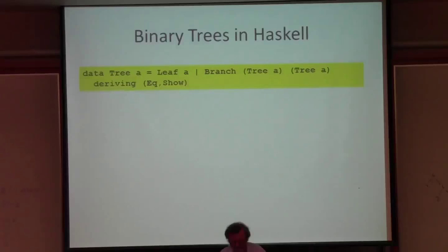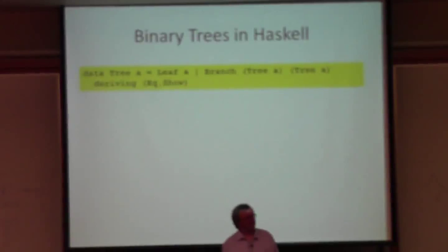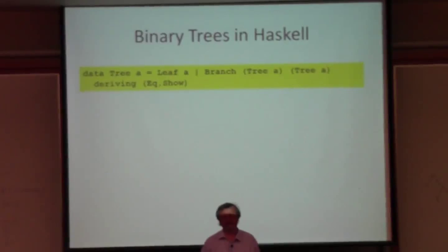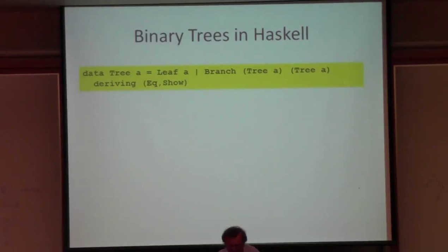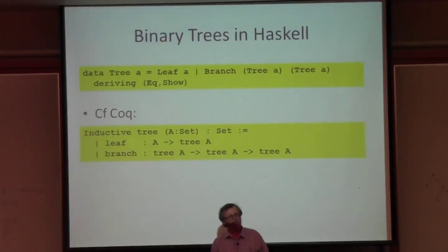For those of you who have never used Haskell, here is an example of a data type definition. This is defining the type of binary trees. A tree containing leaves of type A is either a leaf or it's a branch. If it's a leaf, it contains a component that is an A. If it's a branch, it has a left and a right subtree, which are also trees. I believe that this is the corresponding type definition in Coq. So we're defining a tree of A's with two constructors, leaf and branch, and they have the same types in Haskell as they do in Coq.